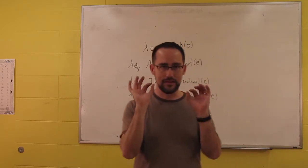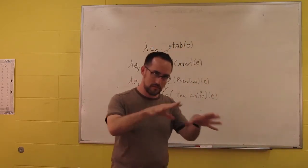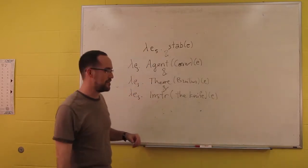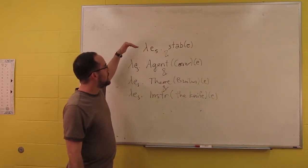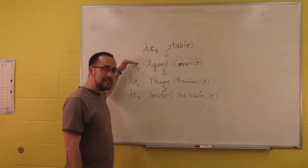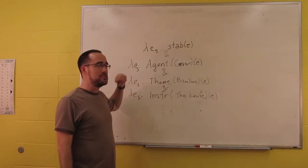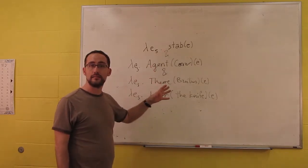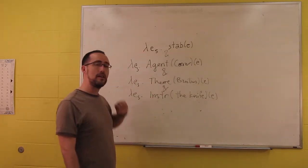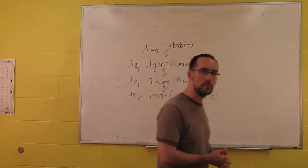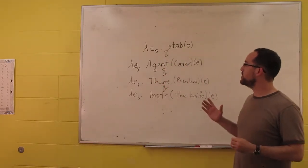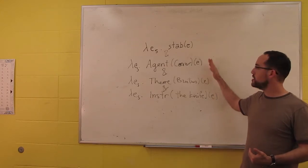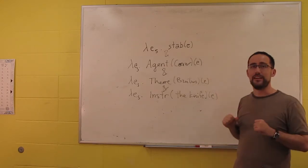Now, here's what Parsons does not say. Parsons is focusing on the meaning — the philosophical side of things. He explicitly said this makes no claims about composition, or how this structure gets built, or the syntax. And so that's going to be the question for us: if this isn't an argument, then how does it get in there?